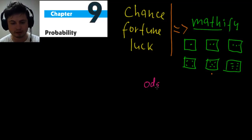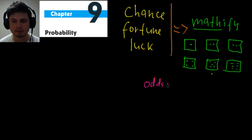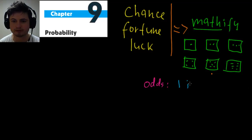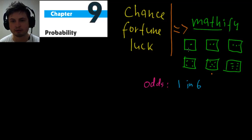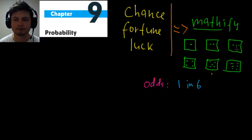The odds are one in six that you'll get any one of these numbers. What about if you want to find out the odds of getting one, two, or three? In that case it's going to be three in six.